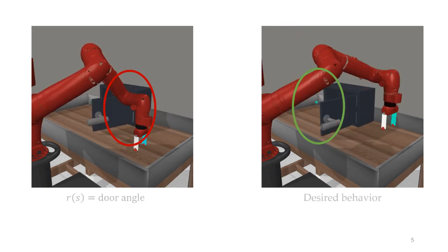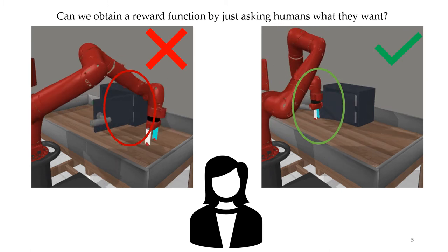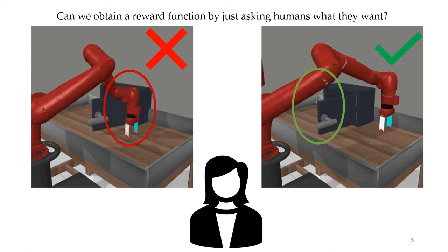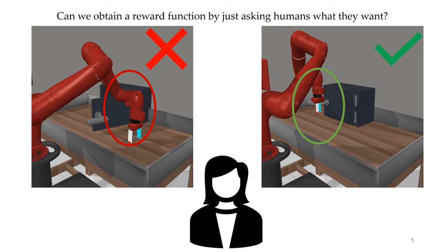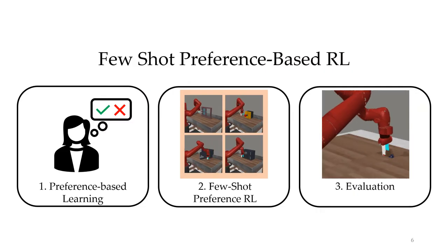Rather than doing a bunch of design work, it would be much easier to just ask a human which of these two behaviors they prefer. We can then use this information to learn a reward model that could be used to train the robot. This is the basis of preference-based RL. Today I'm going to talk about how we can make preference-based RL much more efficient.